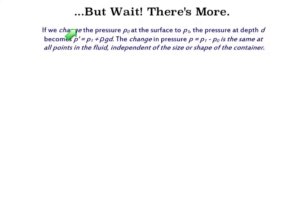But there is also one more important conclusion that we can draw from this. If we were to change the pressure at the surface to P1, some other pressure, at depth D, then, our hydrostatic pressure equation, we have to include that initial pressure. The change in pressure, then, is the same at all points in the fluid, independent of the size or shape of the container.